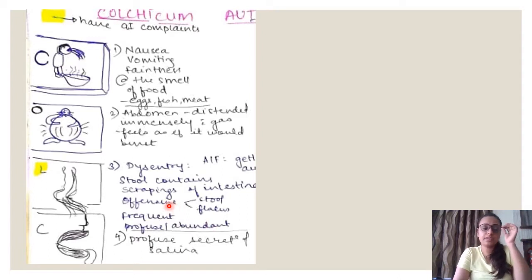The same thing we go for the C here, that is the second C of Colchicum. Second C, these are the two lips if anybody cannot notice it well, and this thing that you can see dropping off is saliva. So Colchicum patients have profuse abundant saliva, secretion of saliva that is the other C. So we have nausea, vomiting, smell, distended abdomen, intestinal scrapings and stool and the second C contains profuse secretion of saliva.